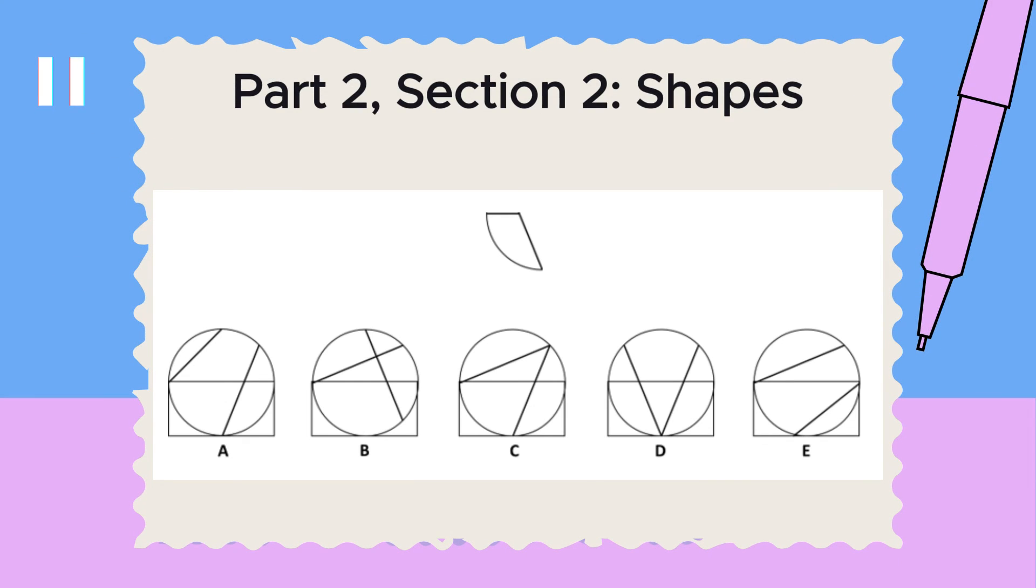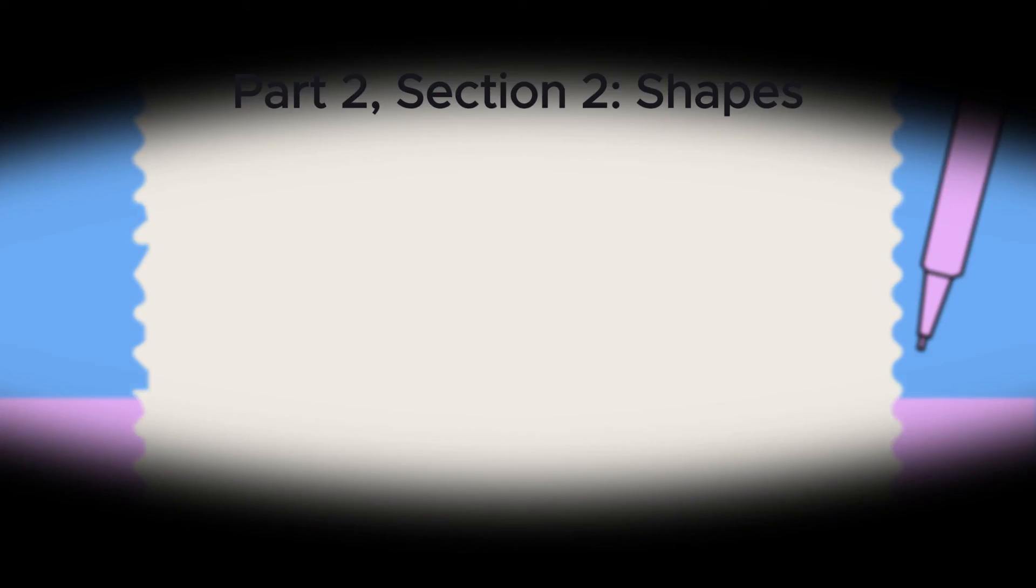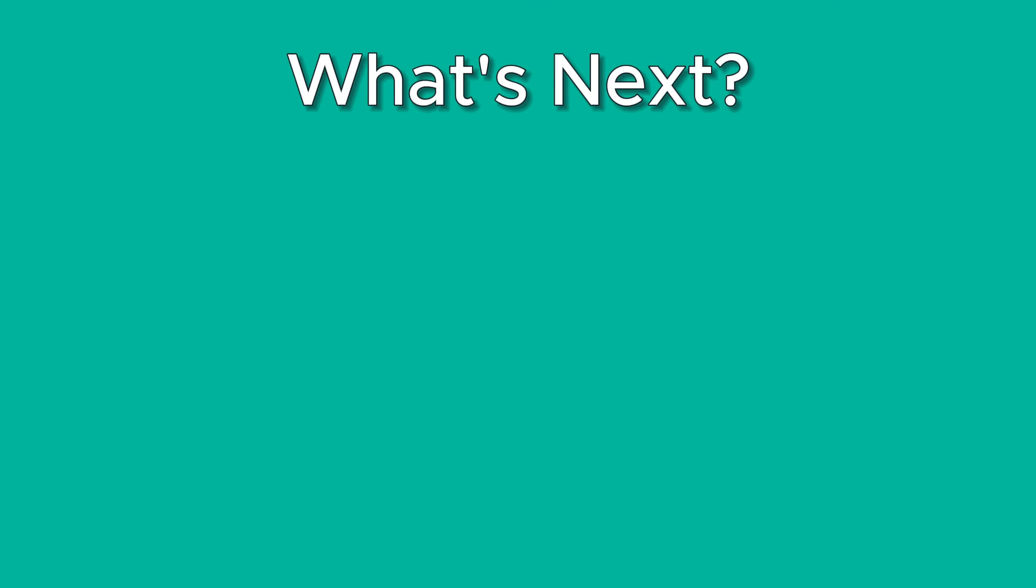Let's answer another sample question from this section. The correct answer is D. The shape is visible at the bottom left of the figure. So, that was the last section of the exam and the last sample question on this video.